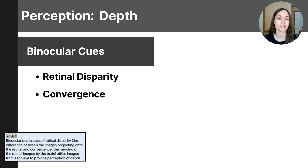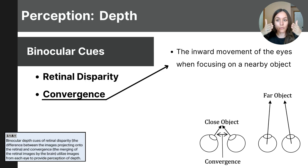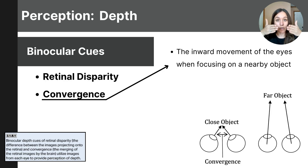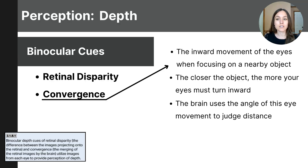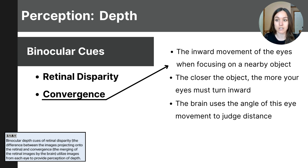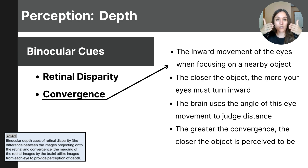Another important binocular cue is called convergence, which refers to the inward movement of the eyes when focusing on a close object. Your eyes have to rotate inward, or converge, to focus on it. The closer the object, the more your eyes need to turn inward. The brain uses the amount of convergence — the angle between the eyes — as a cue to determine the distance of the object. The greater the convergence, the closer the object is perceived to be.